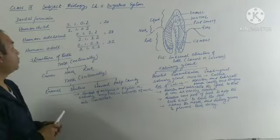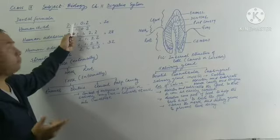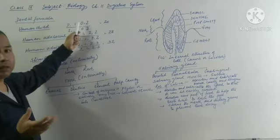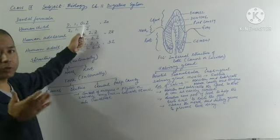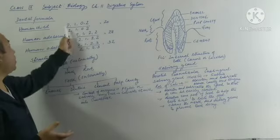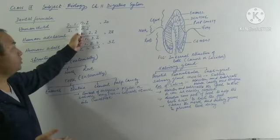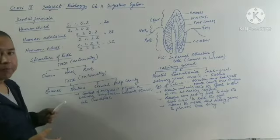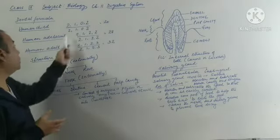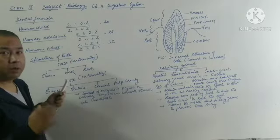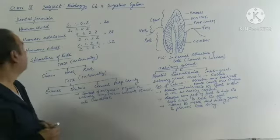When writing the dental formula, we write incisors first. In the upper jaw there are two canines, so in half there is one canine. In a human child there are no premolars, so zero. There are four molars total in the upper jaw, so in half it is two. So the upper jaw formula is: two incisors, one canine, zero premolars, two molars. In the lower jaw: four incisors total, so two in half; one canine; zero premolars; and two molars.